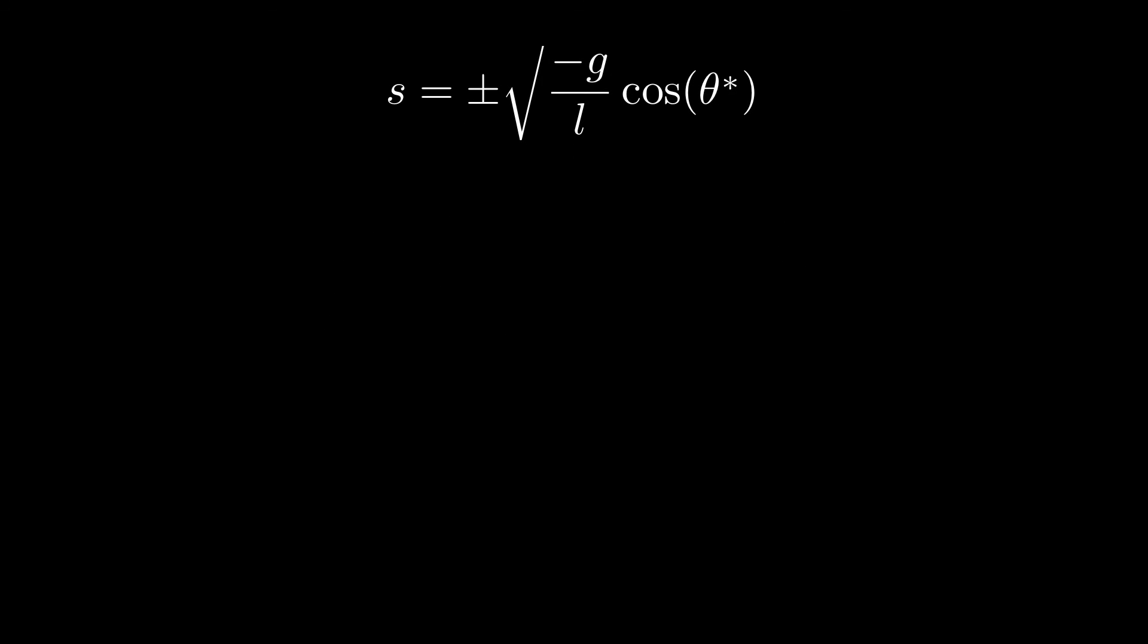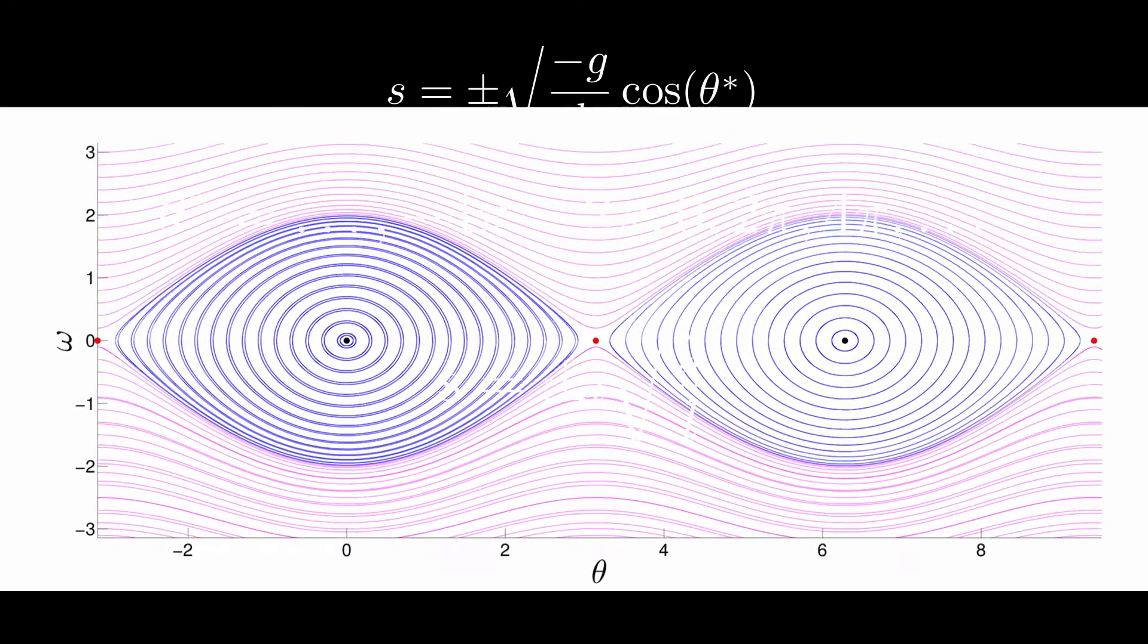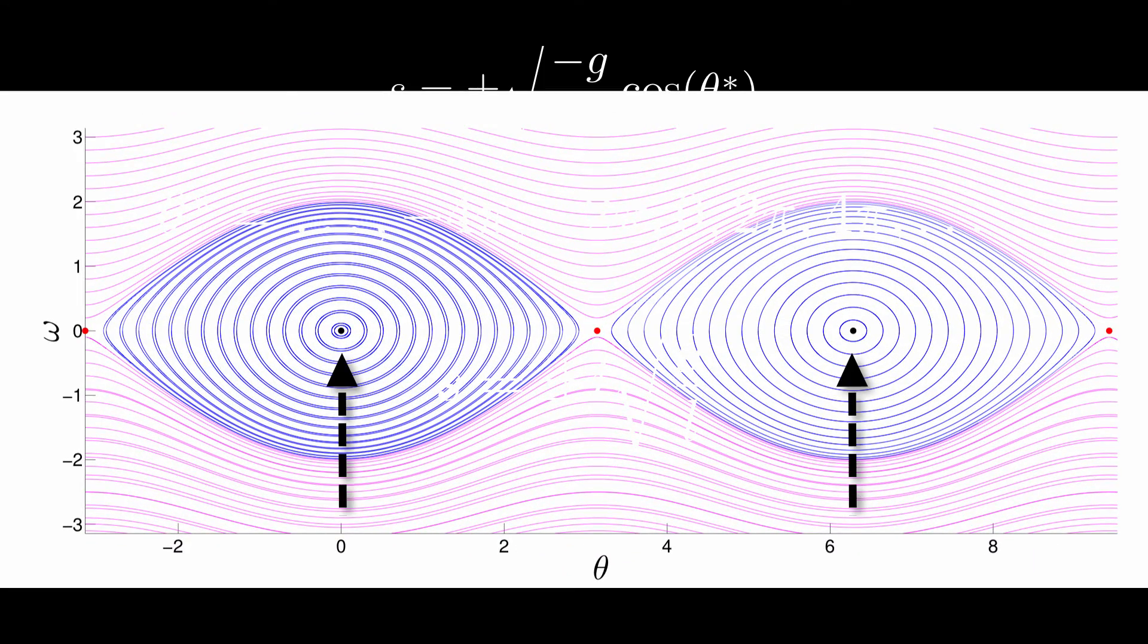If theta star is an even multiple of pi, for example zero, we have that cosine of zero, or any even multiple of pi equals one, and we get that the associated eigenvalues of these fixed points are plus or minus i times the square root of a positive number. So we have two imaginary eigenvalues with zero real part. So the fixed points with theta that have even multiples of pi are elliptic fixed points.